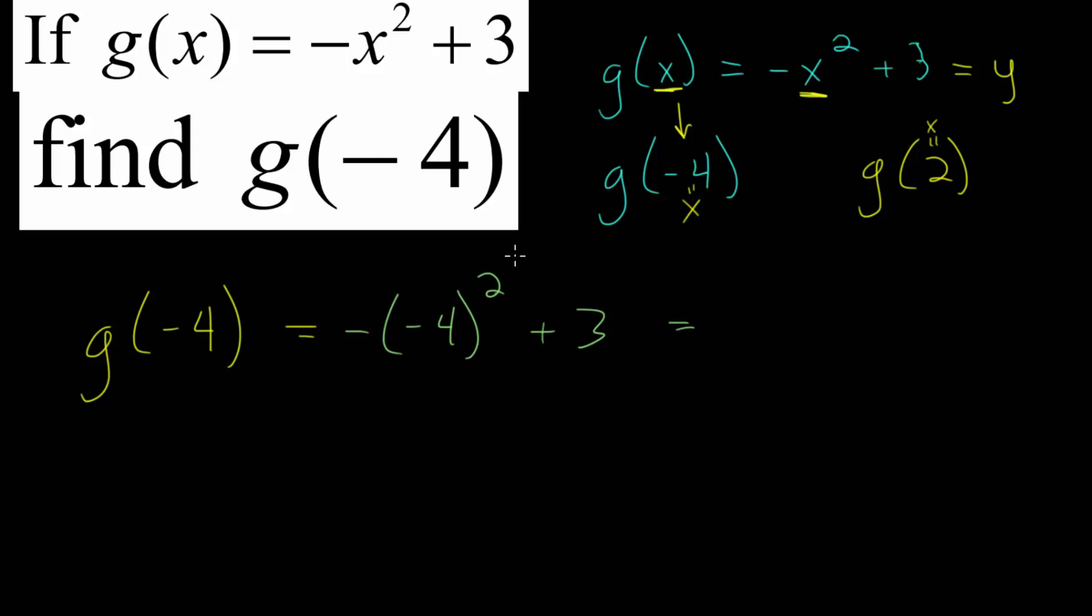We have to square it first before taking its opposite, since we need to carry out our order of operations. And minus 4 squared, we can just rewrite it twice. Minus 4 times by minus 4. And we'll just bring the plus 3 at the end.